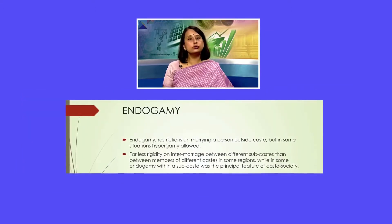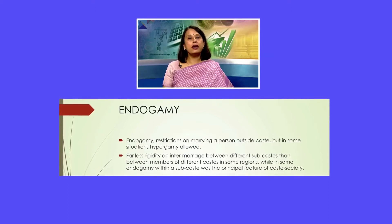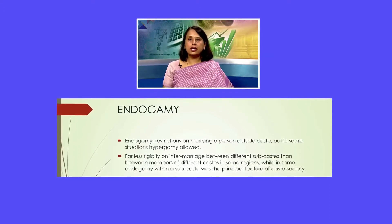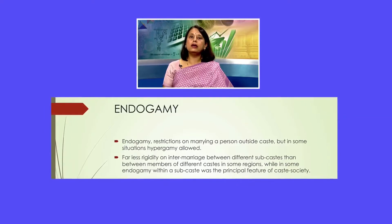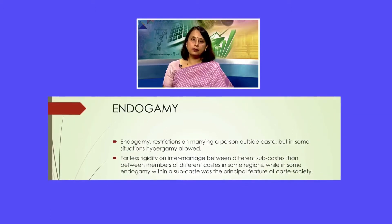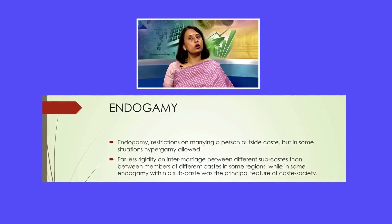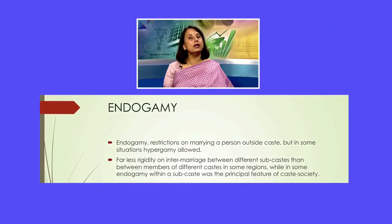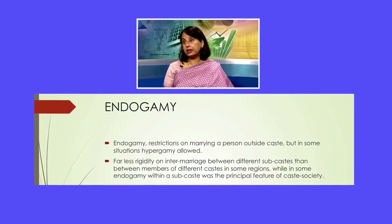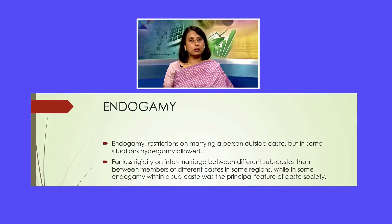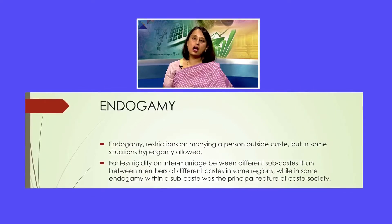Endogamy has to do with marriage practices. The term endogamy means that a person can only marry somebody within the same caste group. There were very strict rules governing inter-caste marriages — people could only marry within the same caste but different sub-castes. I am sure you have often heard of honor killings. Honor killings typically take place when people tend to break the inter-caste marriage rule — that is, when people do not practice endogamy but practice exogamy. Exogamy means marrying outside your caste group.